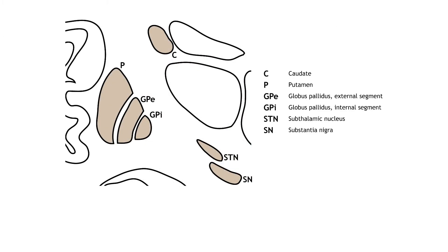There are multiple connections within the basal ganglia structures as well. For motor control there are two main circuits: the direct pathway and the indirect pathway. These circuits have opposing actions when activated by cortical neurons. The circuits are also modulated by dopamine release by the substantia nigra into the striatum. It is believed that the different control mechanisms allow a finely tuned balance between the direct and indirect circuits, which allows for refined control of movement.